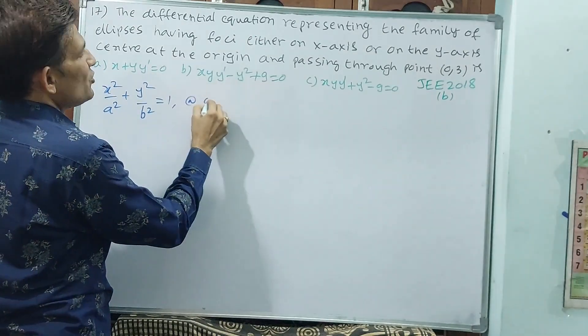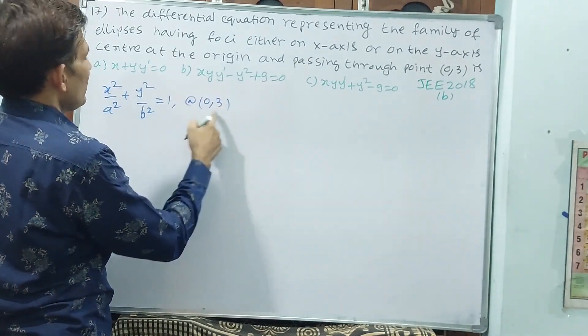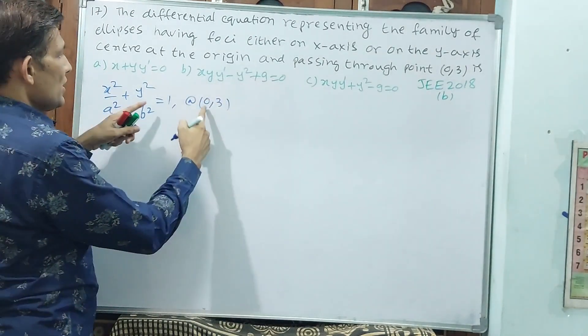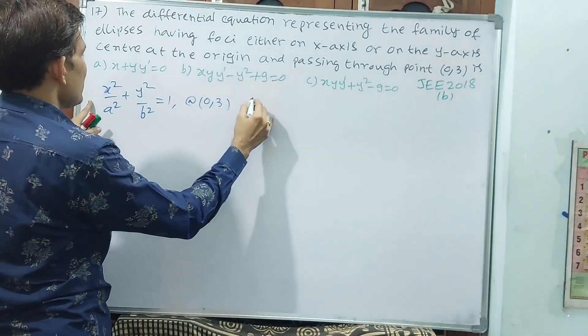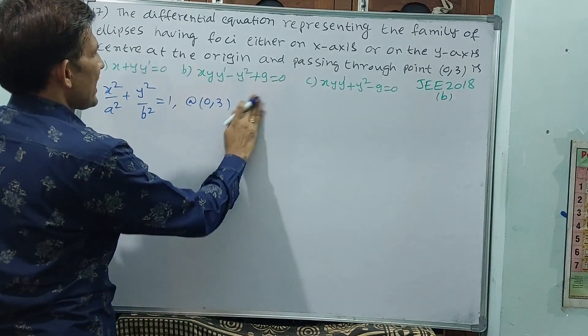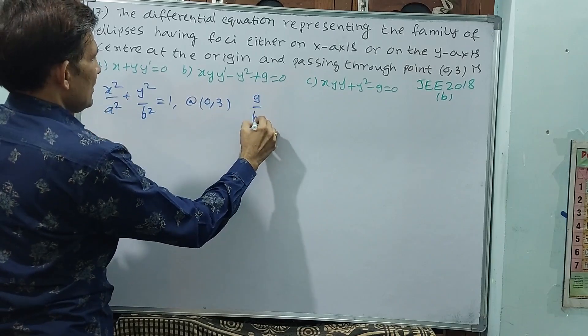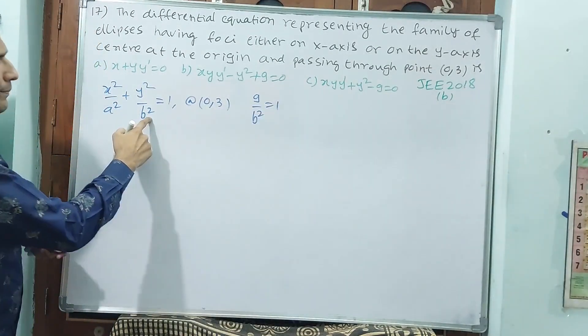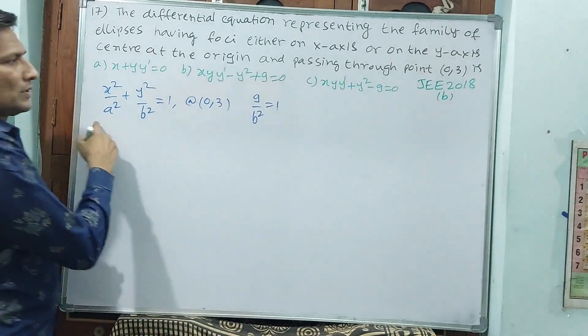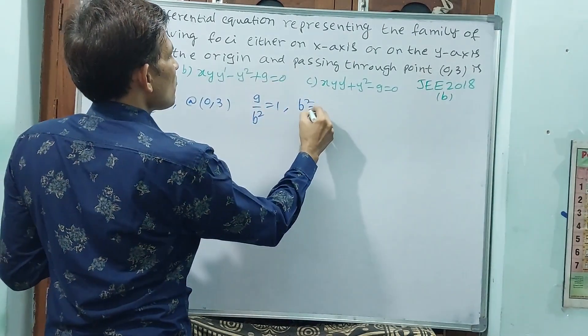At (0,3), this equation, x is 0 means this is going to become 0, need not write. y square means 9 by b square is equal to 1. This is 0. So b square is equal to 9.